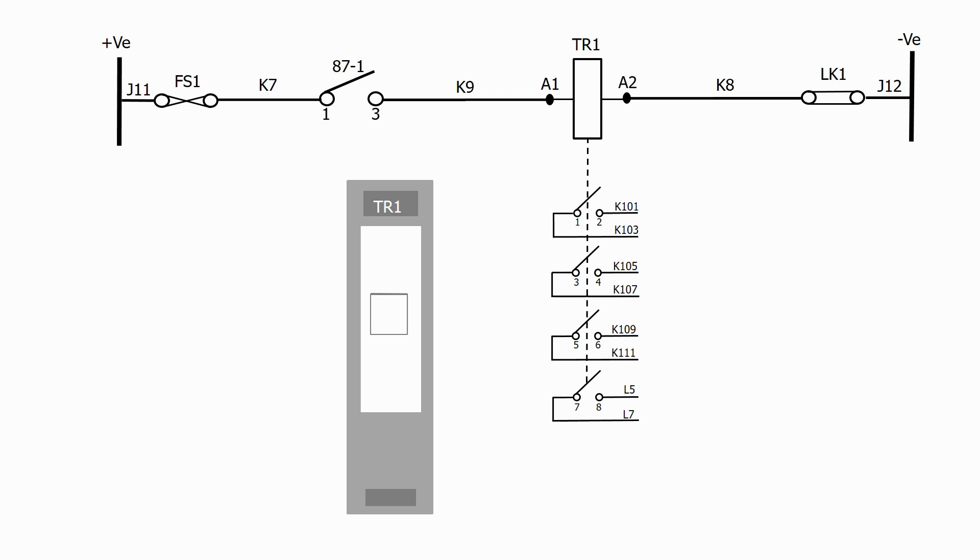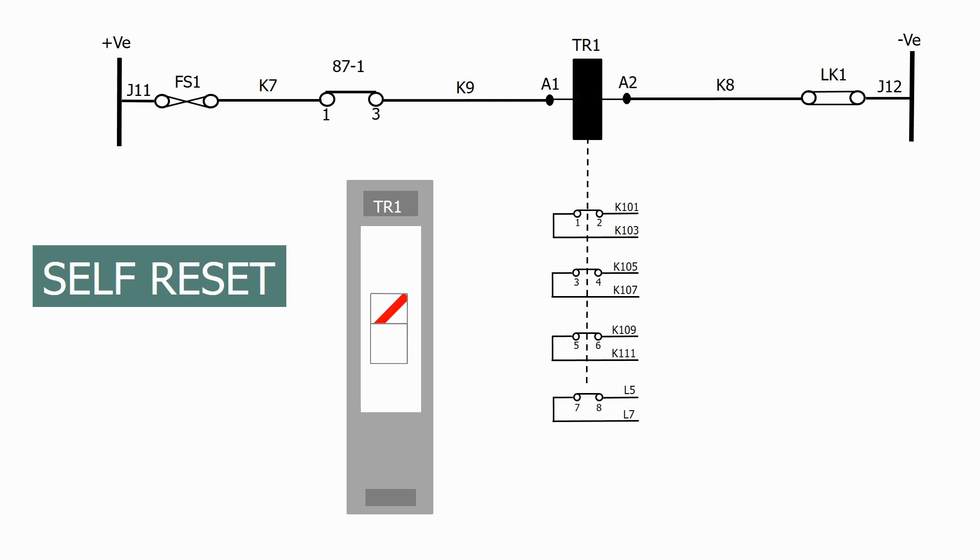The first option is a self-reset flag. In this configuration, when the relay coil is energized, the flag operates and the contacts change state. As soon as the initiation is removed, the coil de-energizes and the flag and contacts return to their original state, hence the name self-reset flag.